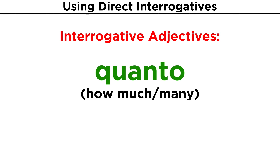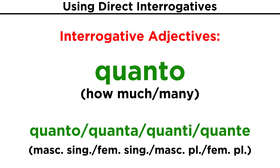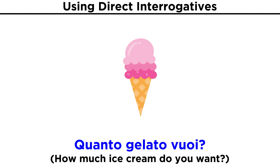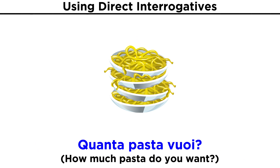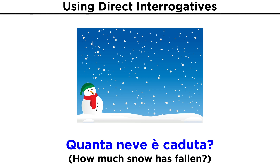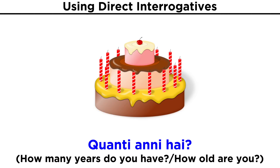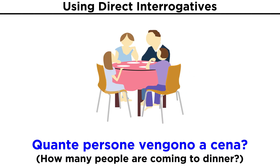We may also want to ask how much or how many. This will require the word quanto, which, unlike quale, has four forms: quanto and quanta for masculine and feminine singular, as well as quanti and quante for masculine and feminine plural. Quanto gelato vuoi? Quanto zucchero metti nel caffè? Quanta pasta vuoi? Quanta neve è caduta? Quanti anni hai? Quante persone vengono a cena?